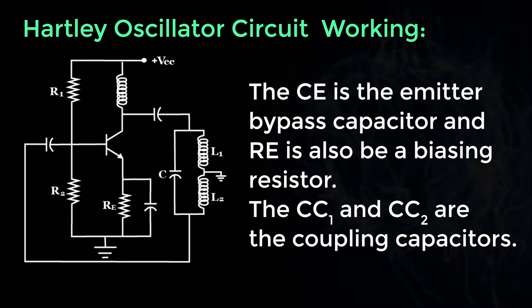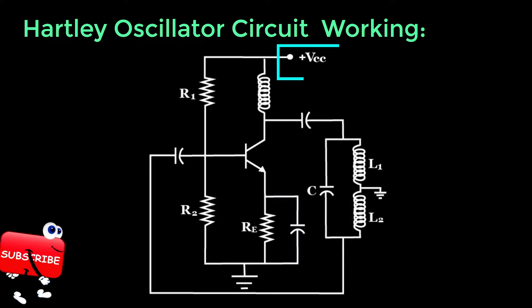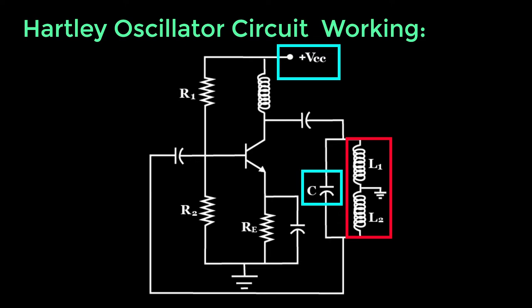The circuit diagram of a Hartley Oscillator is shown here. When the DC supply VCC is given to the circuit, the collector current starts raising and begins with the charging of the capacitor C.